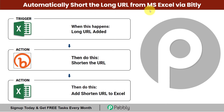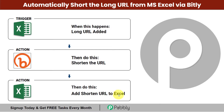Automatically shorten long URLs from MS Excel via Bitly. This is a very interesting automation where you just need to add the long URL into an MS Excel sheet. The same long URL will be picked up automatically, Bitly will shorten the URL, and the shortened link will be added to a separate Excel sheet — all automatically. You can automate your entire URL shortening process using this automation.